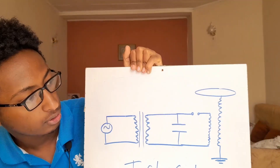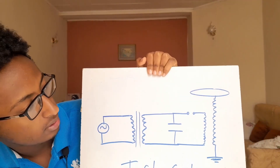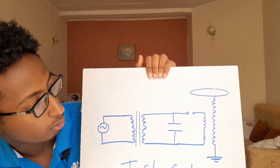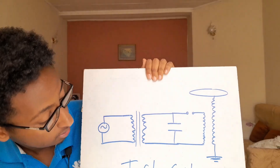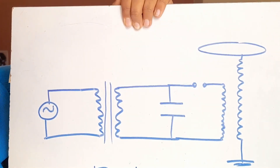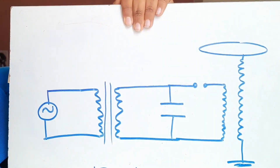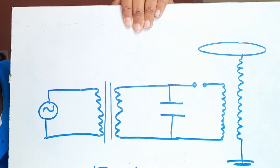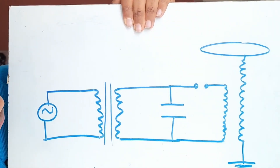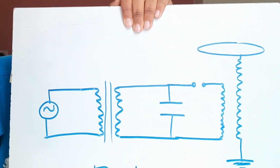Then let me show you how it's done. As you can see on the camera, this is the schematic of the Tesla coil. As I told you earlier, it's a resonance frequency device that's used to generate a really insane amount of energy or voltage.